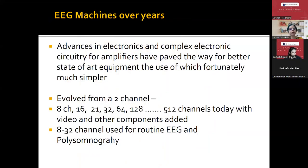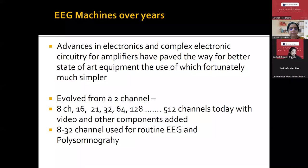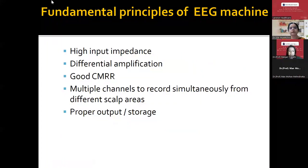Looking at EEG mechanics — there are so many advances in electronics and complex electric circuitry for the amplifiers. Hence, initially it was a two-channel EEG; now we do up to almost 256-channel EEGs, especially when doing stereo EEG recordings, and even 512-channel recordings are also available. But nowadays we use anywhere between 8 to 32 channels — mostly 32-channel EEG recordings — and in polysomnography we use 8 electrodes related to EEG recording.